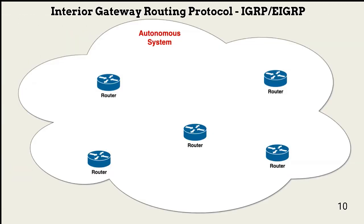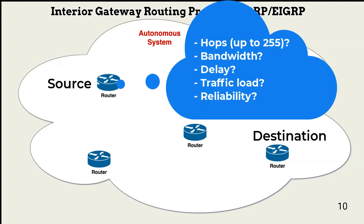The Interior Gateway Routing Protocol, or IGRP, was developed by Cisco. It's both a distance vector and interior gateway protocol that manages routing within an AS. One of the reasons for IGRP was to eliminate the limitations of RIP — in addition to expanding the hop count far beyond 15 to 255, it also uses additional information to determine the most efficient routes, including bandwidth, delay, traffic load, and reliability.